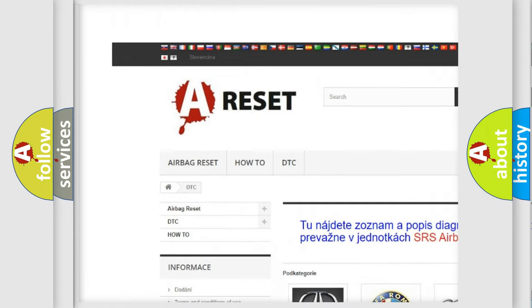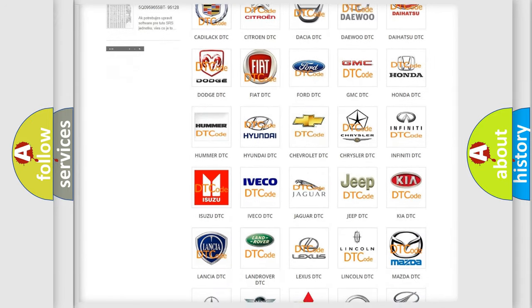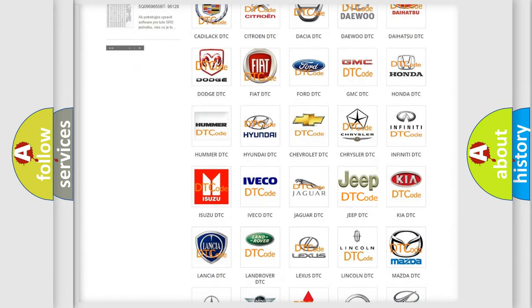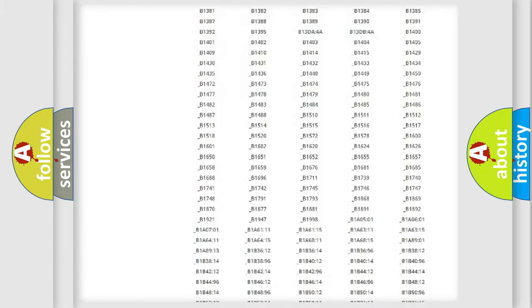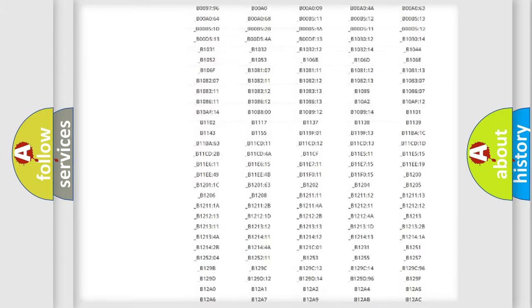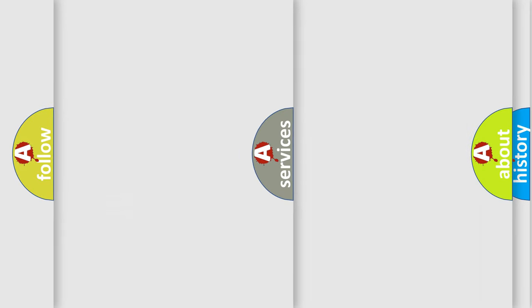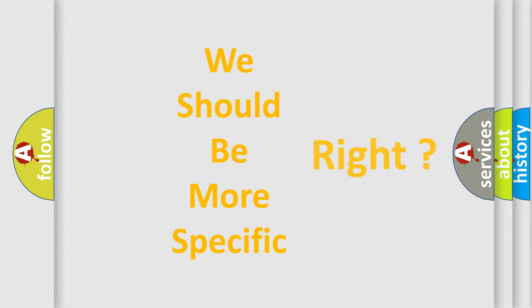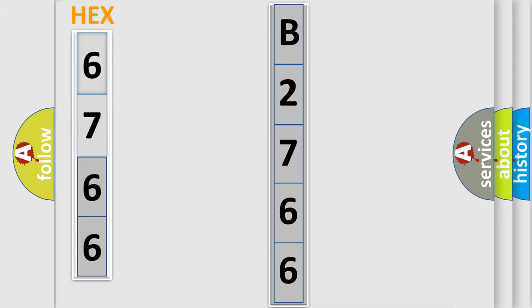Our website airbagreset.sk produces useful videos for you. You do not have to go through the OBD2 protocol anymore to know how to troubleshoot any car breakdown. You will find all the diagnostic codes that can be diagnosed in Jeep vehicles, and many other useful things. The following demonstration will help you look into the world of software for car control units.